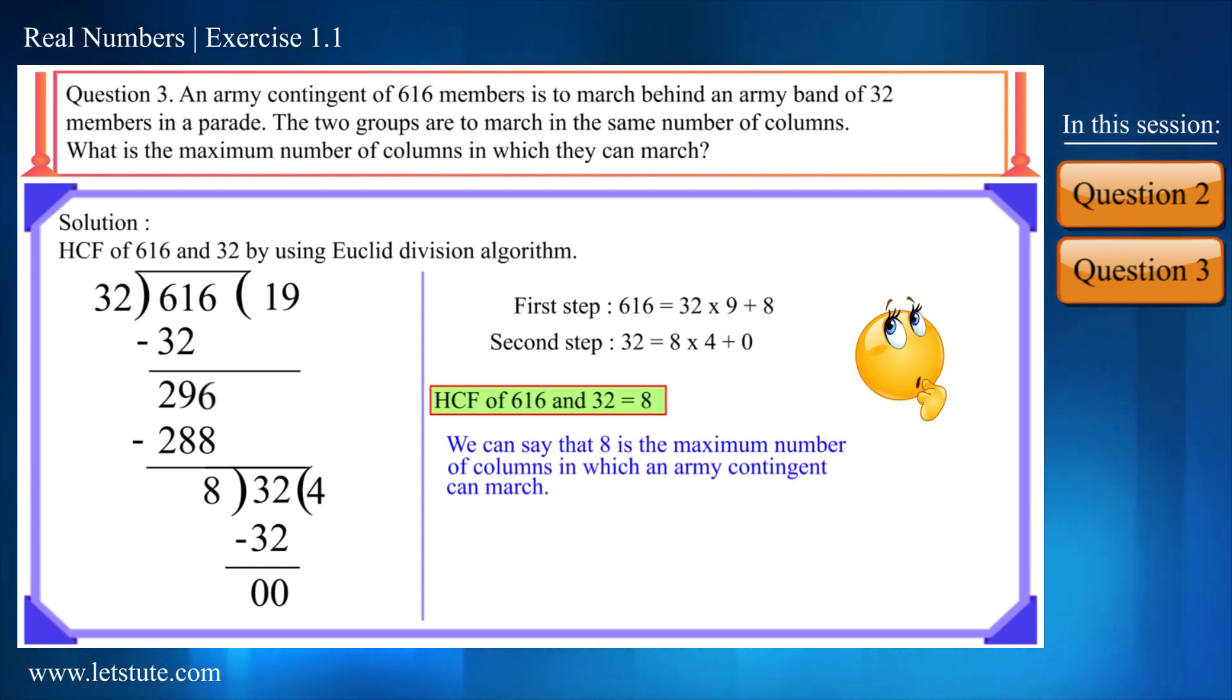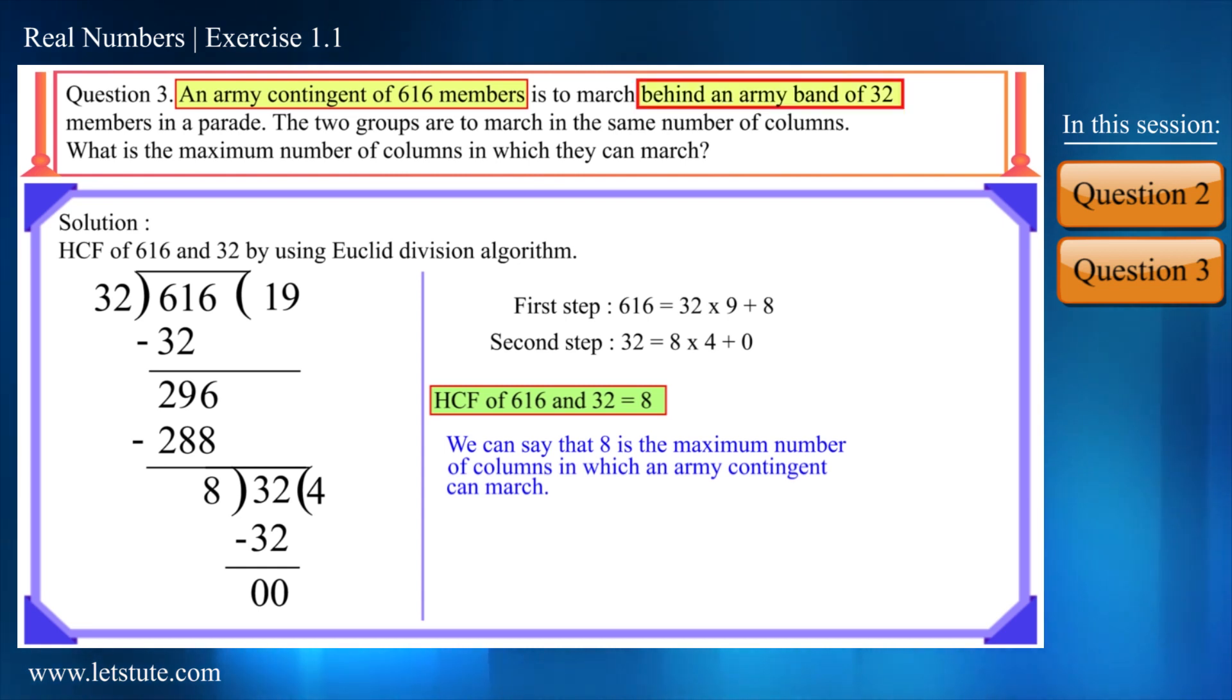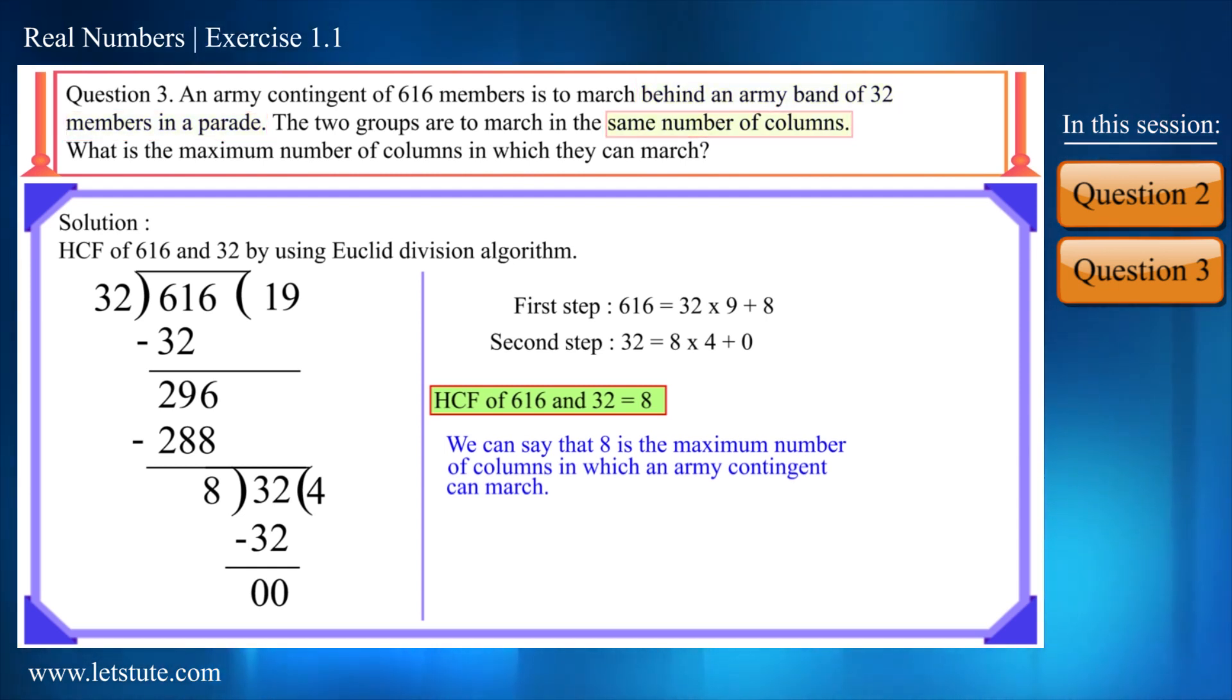Friends, can you tell why in this question we have only find the HCF of these two numbers? Or how did we decide that we have to find the HCF? Friends, don't worry. There is one way to do this. Look at the question carefully. There is a group of an army contingent of 616 members is to march behind an army band of 32 members in a parade. We have to find the same number of columns as well as the maximum number of columns in which they can march.